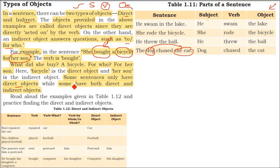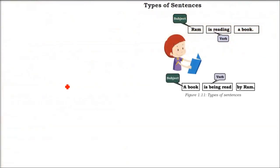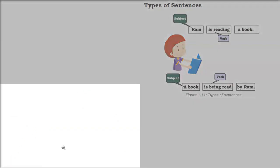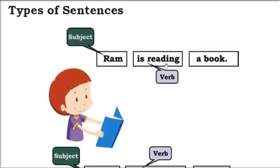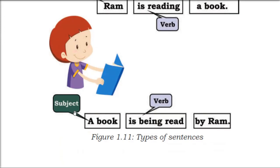This is how the types of objects work in sentences. Now what are the types of sentences in terms of voice? We have active and passive. Ram is reading a book — Ram is the subject directly doing the work on the object, so reading is the verb and book is the object.